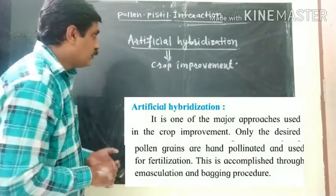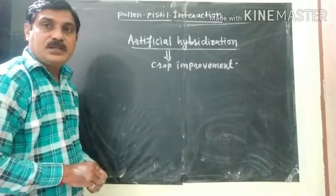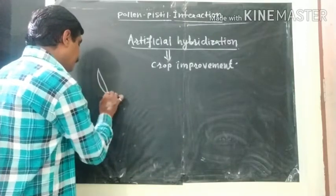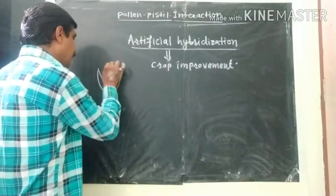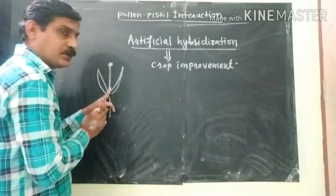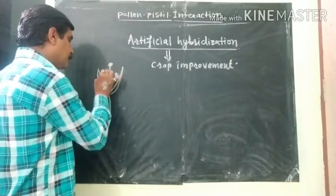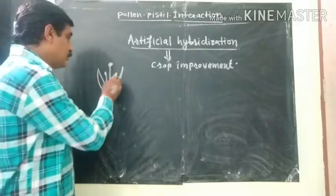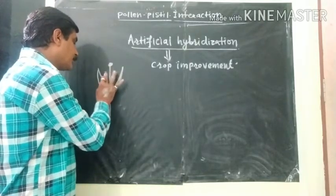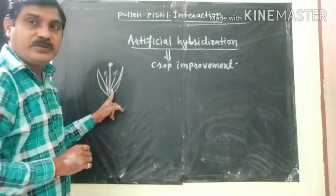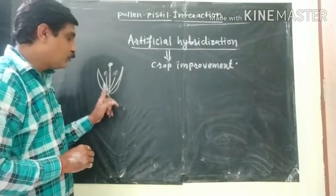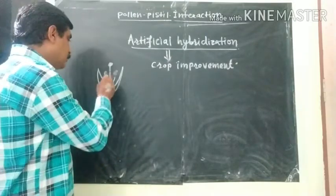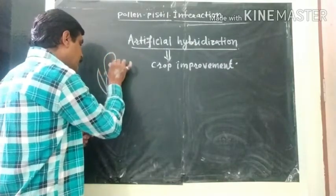The procedure of artificial hybridization follows emasculation, then bagging, then tagging. First is emasculation: in a bisexual flower, with the help of forceps, the anther is removed to prevent the self-pollination process. This process is known as emasculation.